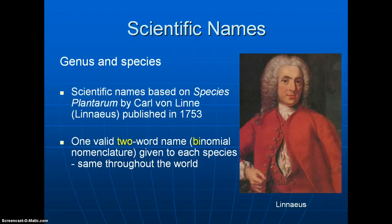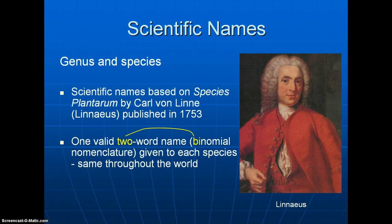Let's move now to the scientific names of individual plants. You'll find that there are two Latin names for every plant, a system developed by Carl von Linnaeus in 1753 when he wrote Species Plantarum, where he developed a system of two-word naming — binomial nomenclature — which gives each species a unique two-word name throughout the world. So Acer negundo, whether it's called box elder or Manitoba maple, it's Acer negundo no matter where you are.